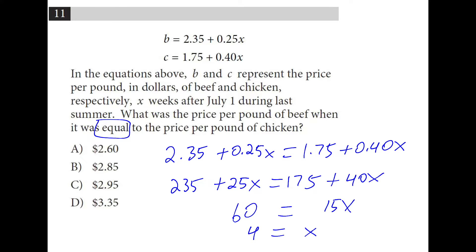That's not the answer, though. They want to know what was the price per pound of beef at this time. So when x was 4, what was the price per pound of beef? So a quarter times 4 is $1 plus $2.35 is $3.35.